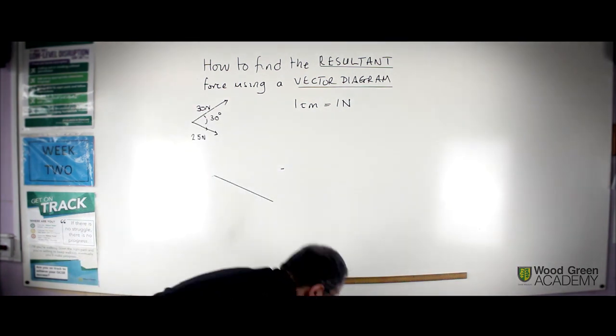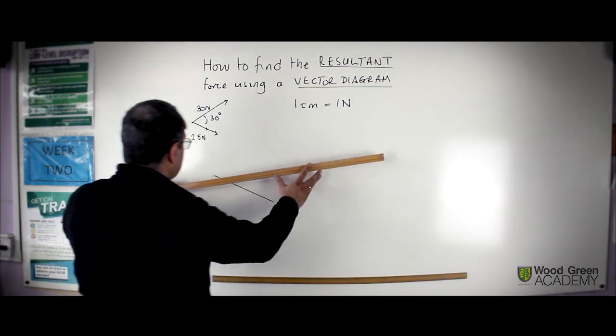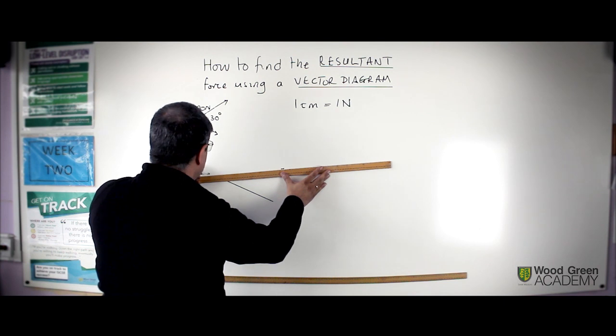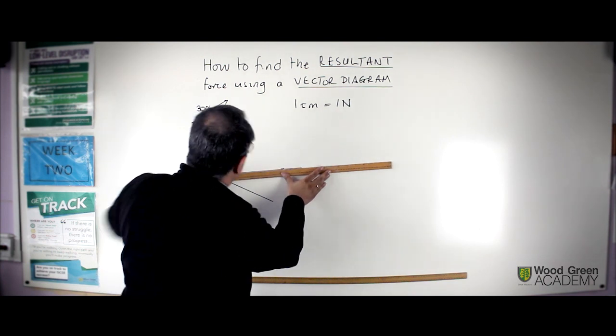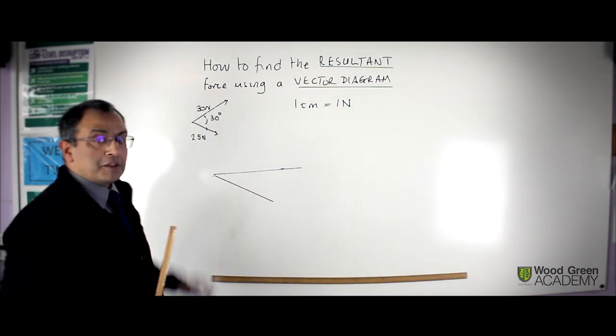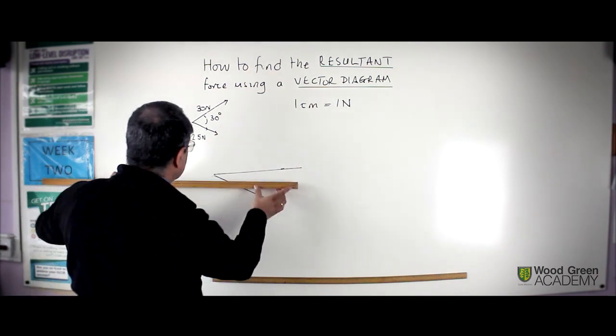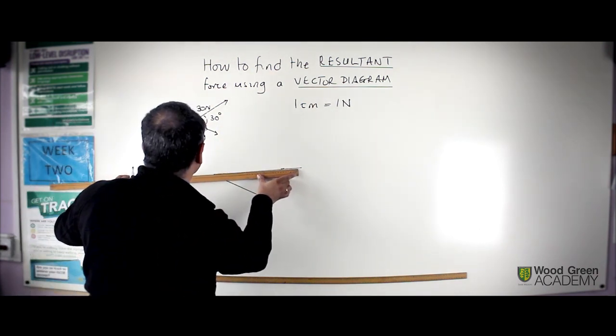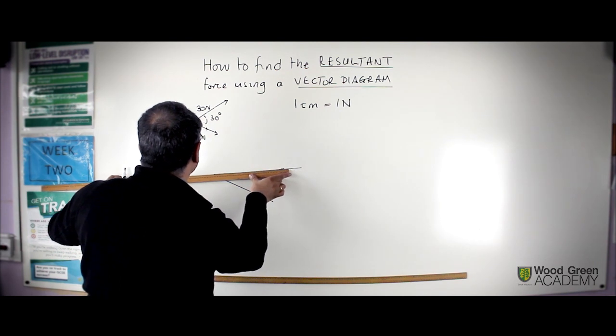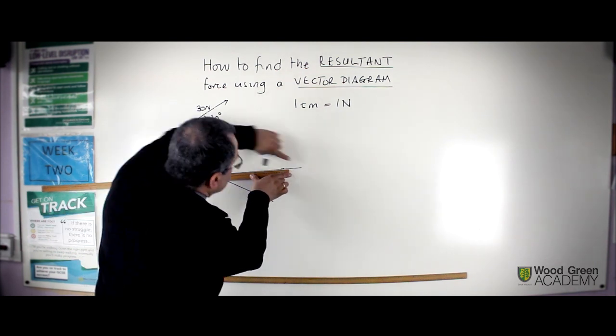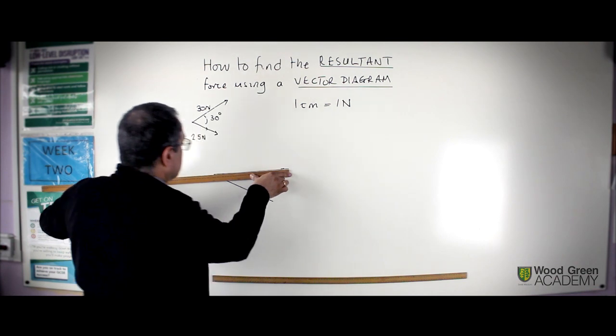And then mark off the... Let's just draw a line that's long enough. And it needs to be 30 cm. So, I'll just make sure that that's 30 cm. 30 cm. That's 30 cm.